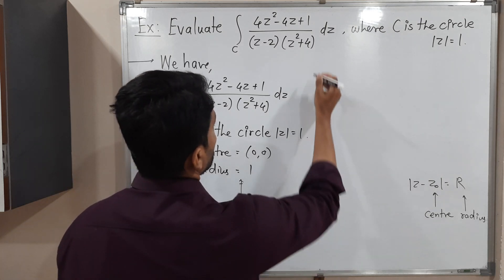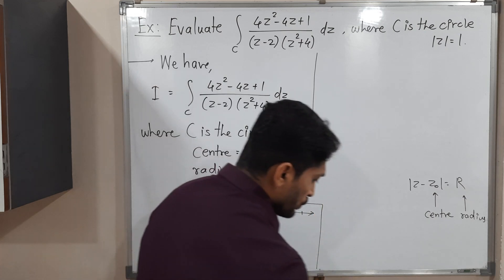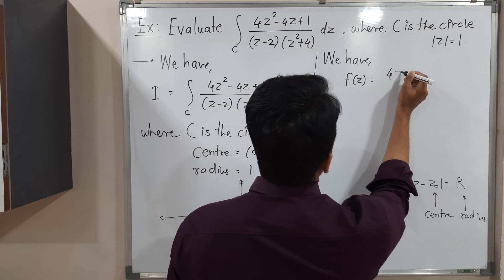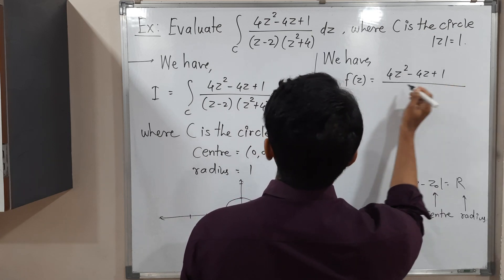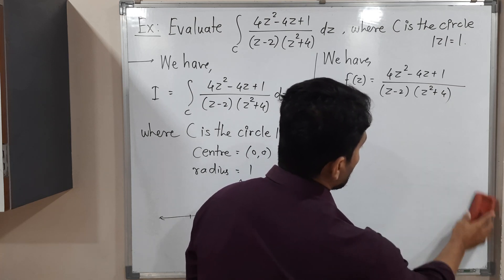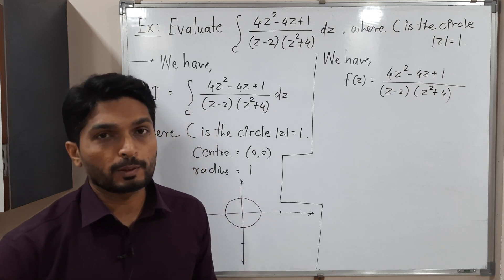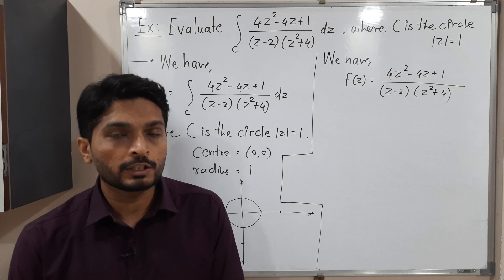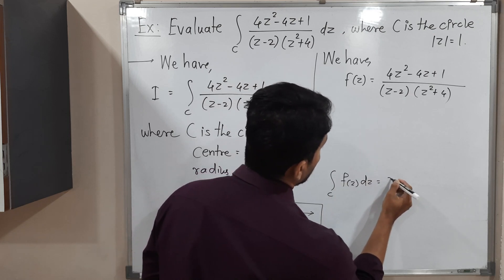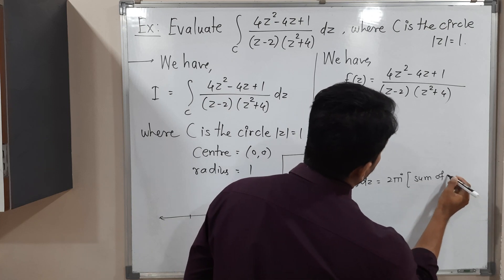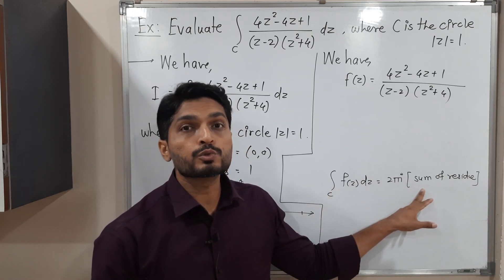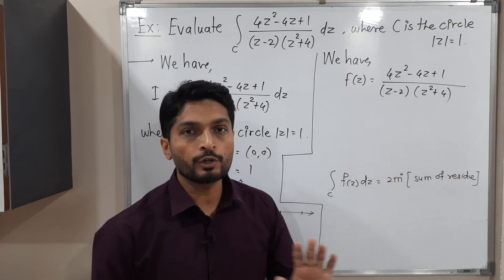Now let us think about the function. The given function is F(z) = (4z² - 4z + 1) / ((z - 2)(z² + 4)). We are planning to use Cauchy's residue theorem to solve this problem. The statement of Cauchy's residue theorem is: the integral over C of F(z)dz equals 2πi times the sum of residues. This theorem says we can find the value of the integration using residues only, without using a single formula of integration.